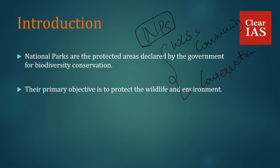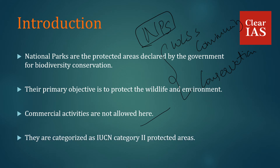The primary objective of National Parks is to protect the wildlife and environment. Commercial activities and human activity are not allowed in National Parks. They are categorized as IUCN Category 2 protected areas. The International Union for the Conservation of Nature has categorized protected areas into six categories, and National Parks come under Category 2.